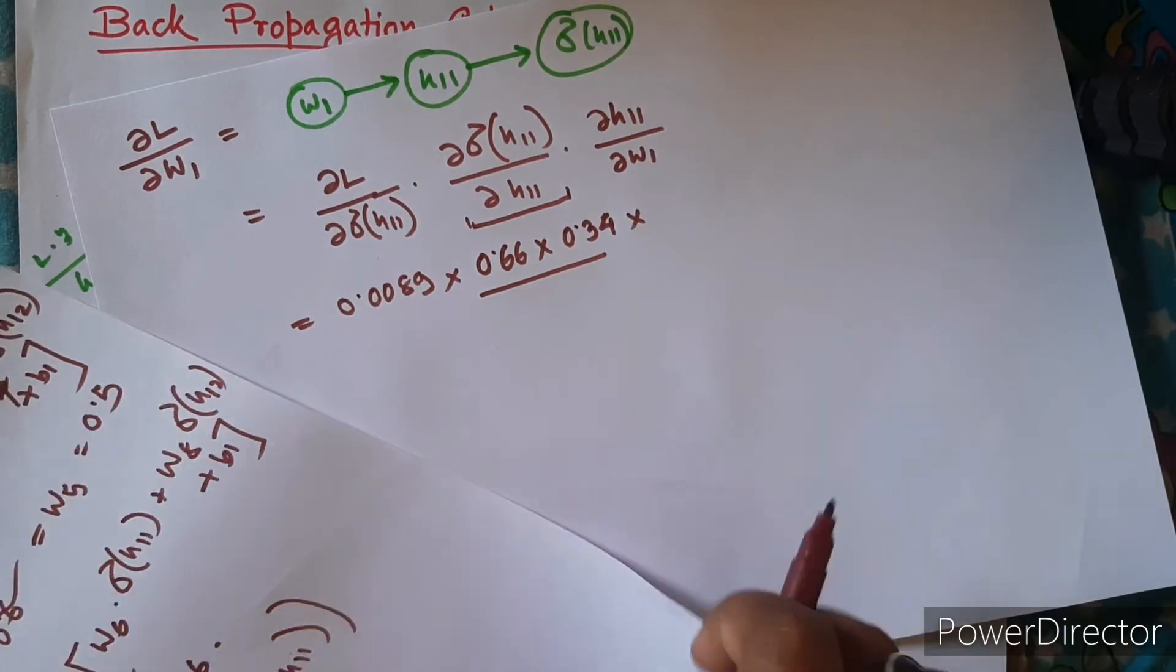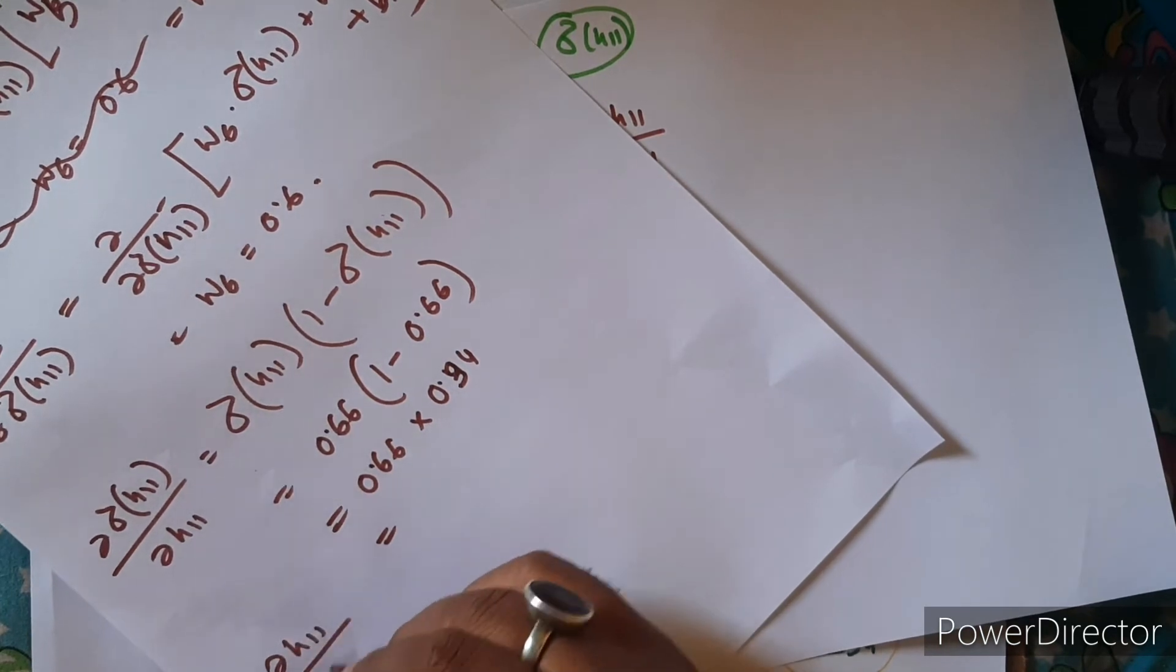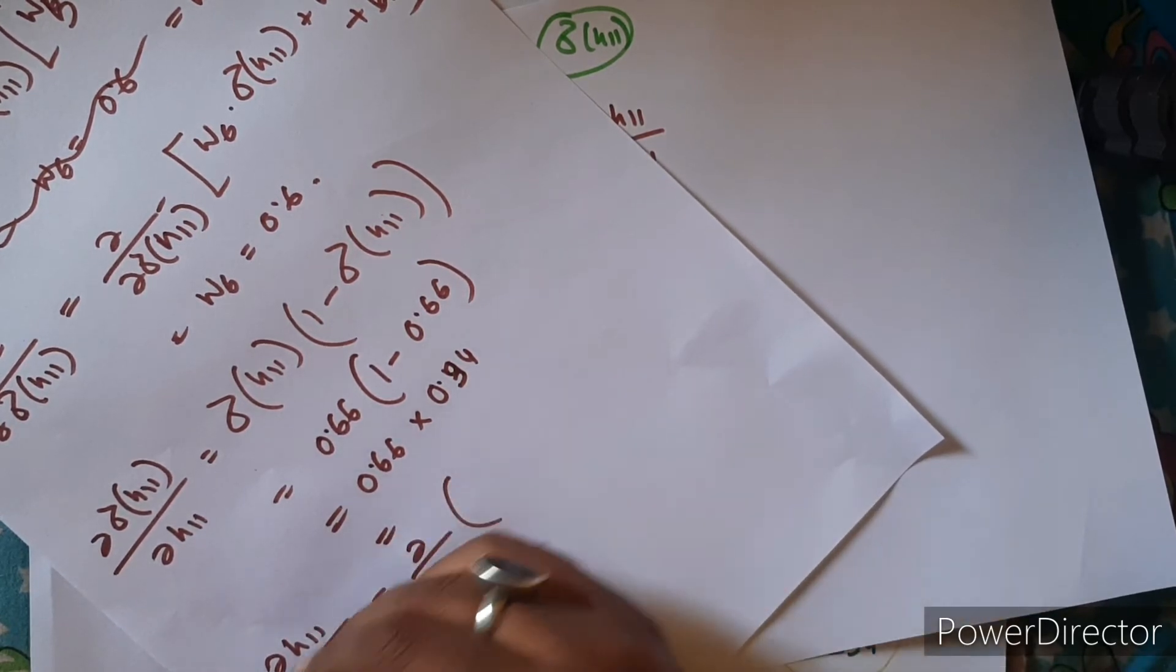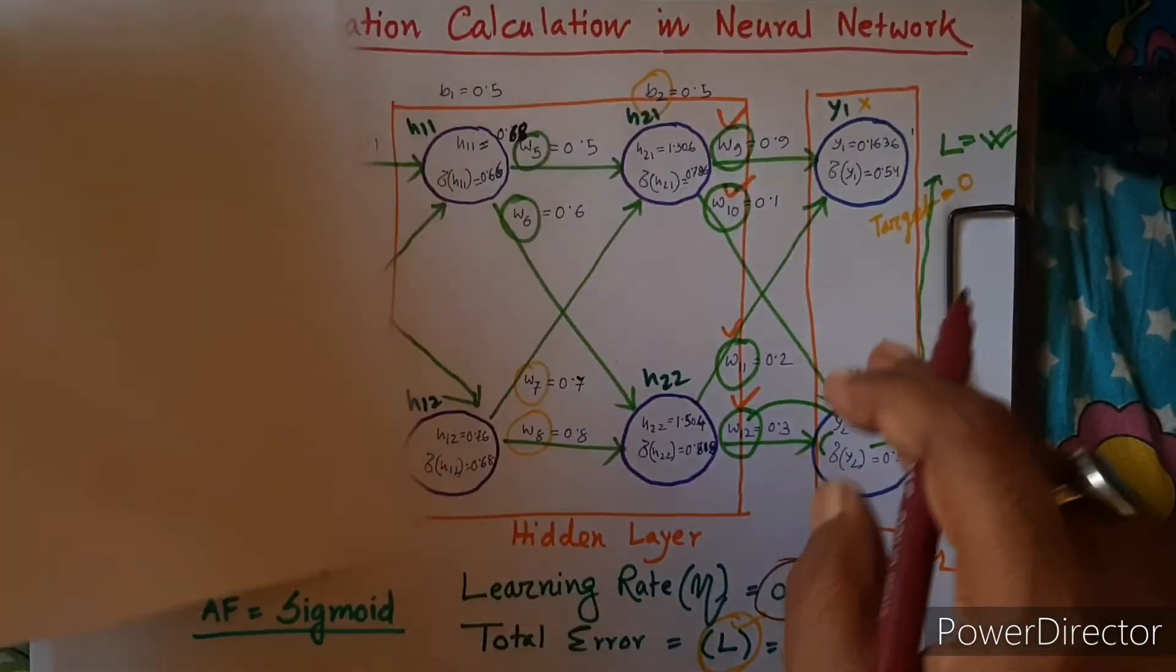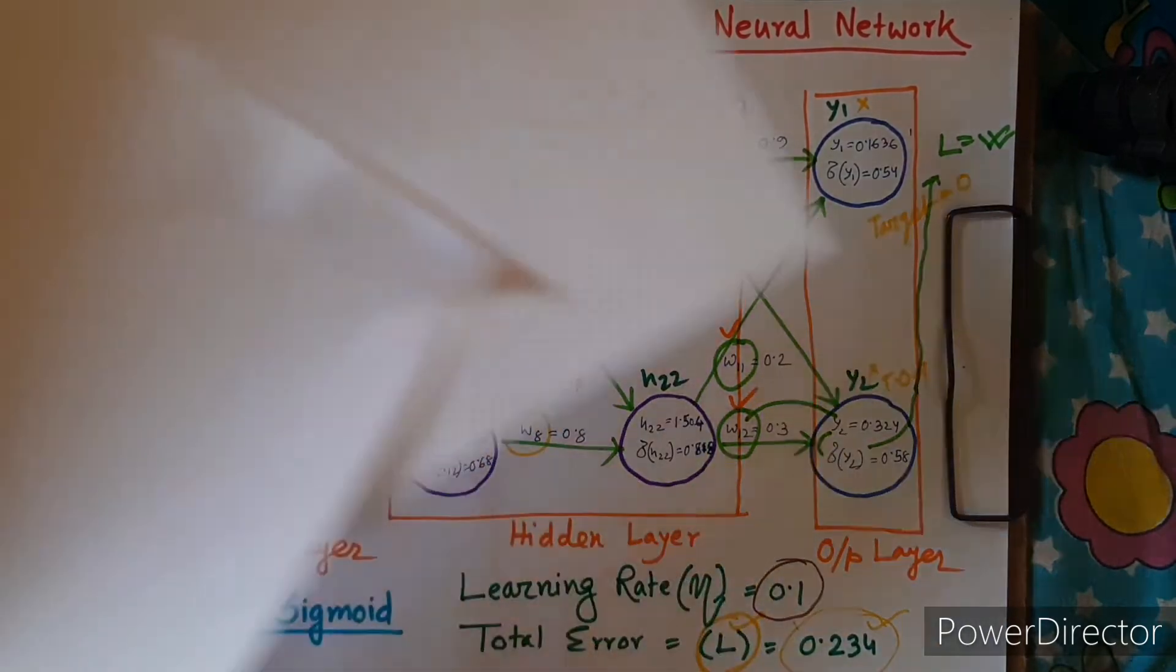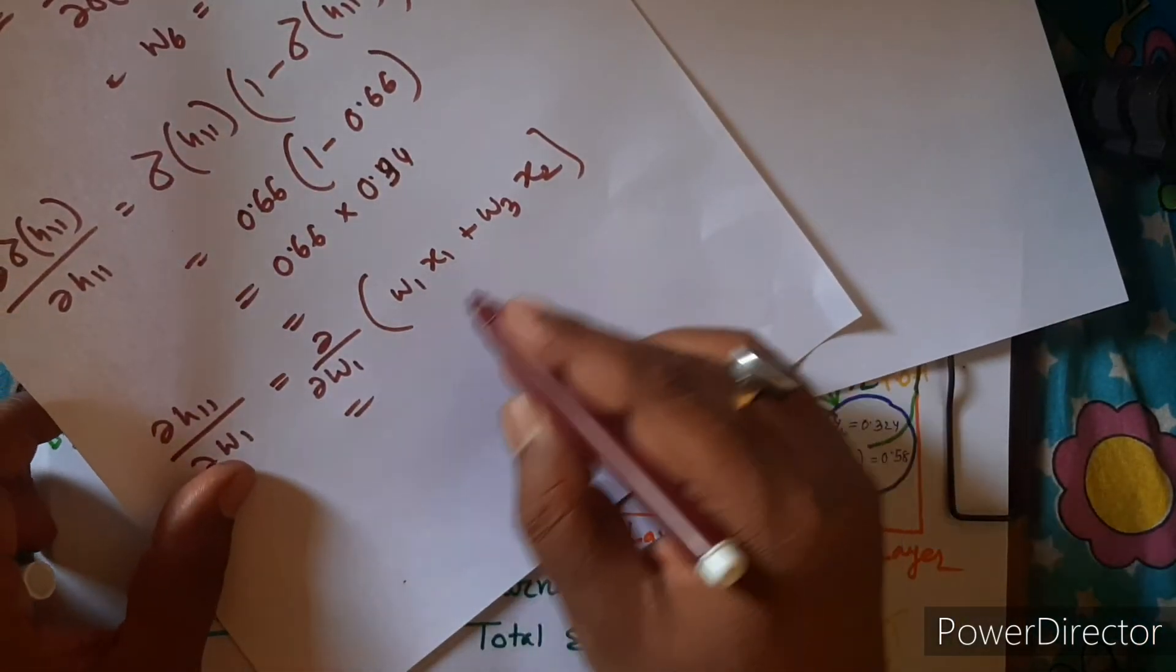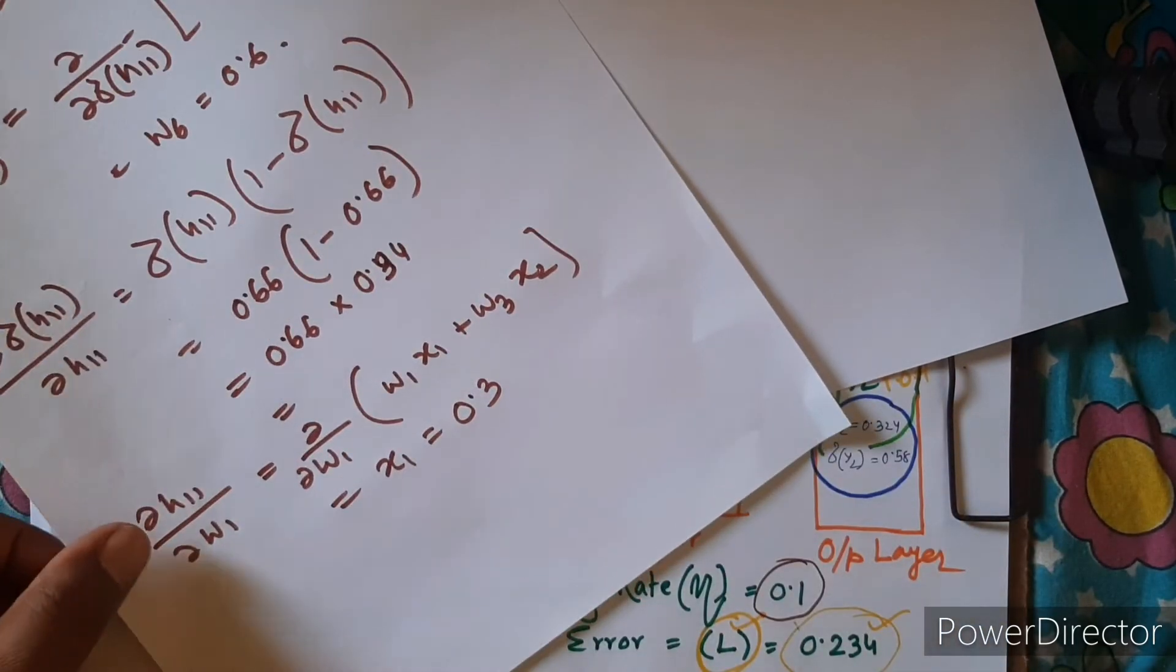Now let's come back to derivative of H11 with respect to W1. It's very simple derivative of W1. I am breaking down H11, so H11 is actually W1 X1 plus W3 X2. W1 X1 plus W3 X2, so it will be X1, which is equal to 0.3, right?